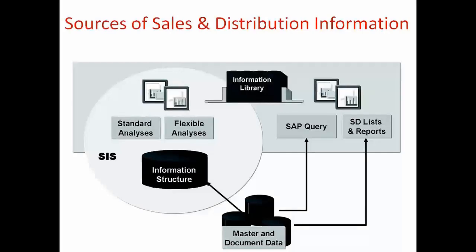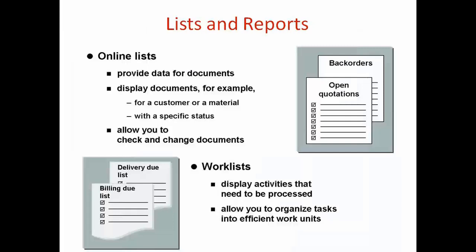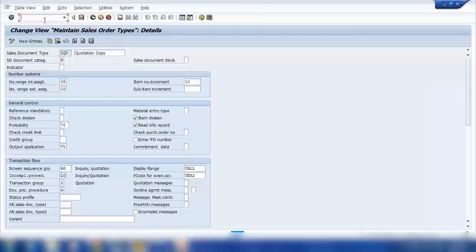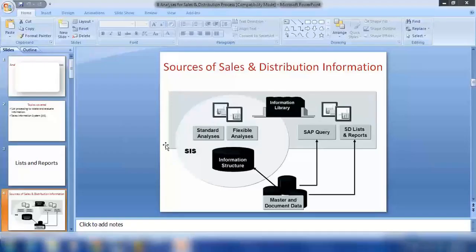In SAP we have basically different types of information. For example, you can see we created a lot of orders in the system. But if you need to search for something — say in your company people are creating hundreds of sales every day — we have some tools to search for a particular sales order for a customer, or any quotation, inquiry, billing document, delivery document, and so on.